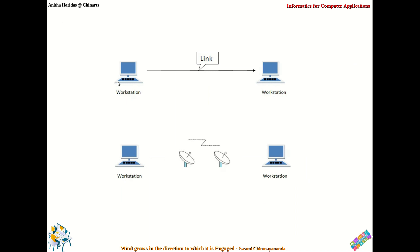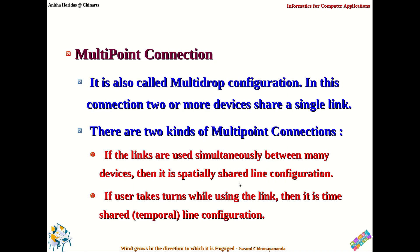This workstation is connected with this workstation using a wire, whereas these two workstations are connected using wireless service — that is a point-to-point connection. Whereas in the multipoint connection, we also call it a multidrop configuration. Here two or more devices share the same link. There are two kinds of multipoint connections: if the links are used simultaneously between many devices, then it is spatially shared line configuration; whereas if a user takes turns while using the link, then it is time-shared line configuration.